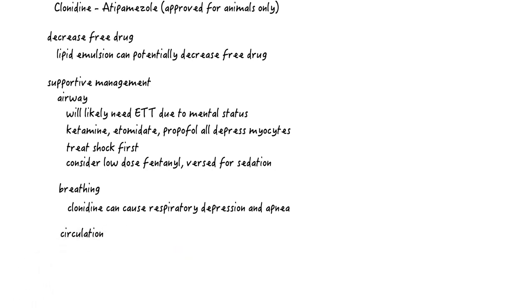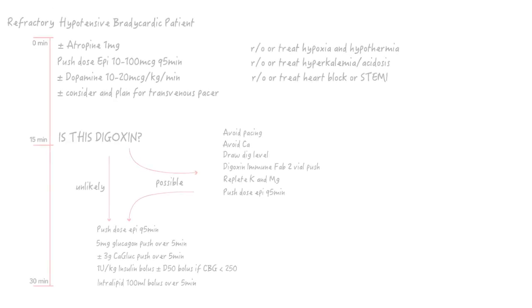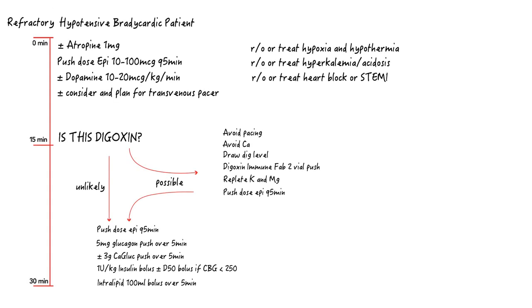For circulation, well, that was the bulk of this talk. But to review, for the hypotensive bradycardic patient, you can give them atropine, push-dose epinephrine, dopamine. And if these therapies don't work, then recognize that you are dealing with the refractory hypotensive bradycardic patient.